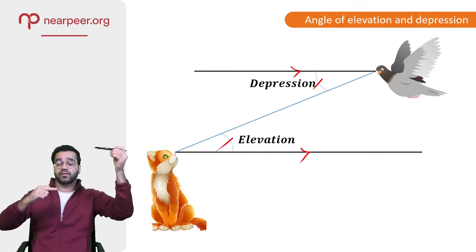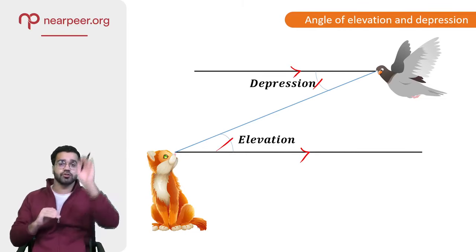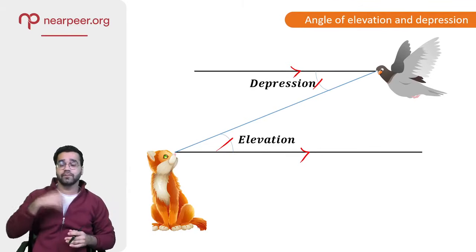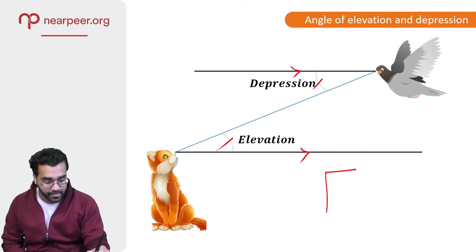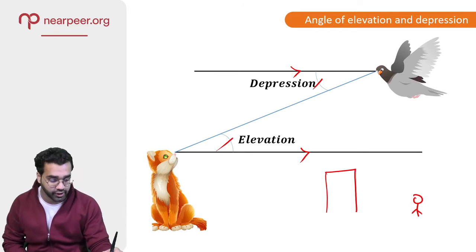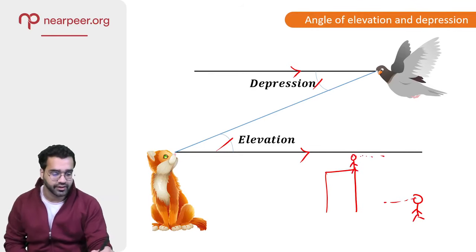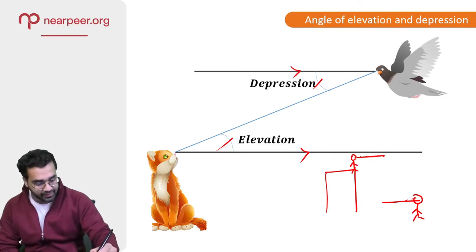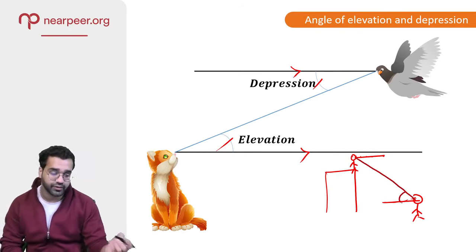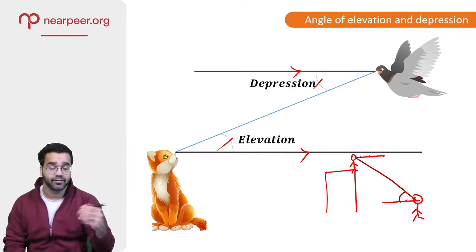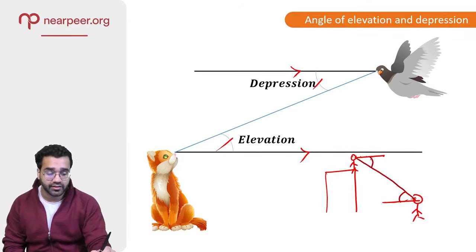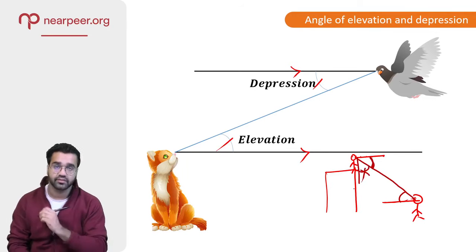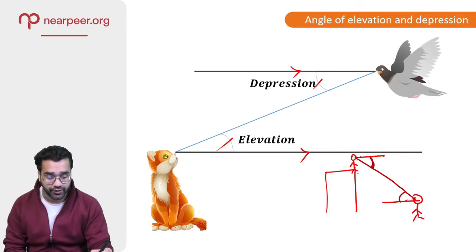For example, if I'm standing in front of a building — this is the building, I'm standing here, this is my line of sight — and my friend is at the top with his line of sight, then the angle I make by looking up is the angle of elevation, and the angle my friend makes looking down is the angle of depression. Please note it's this angle that is the angle of depression — not this other one.